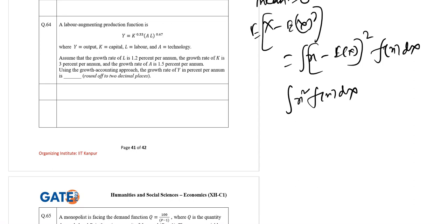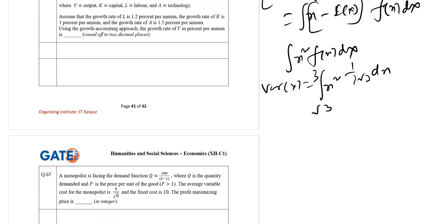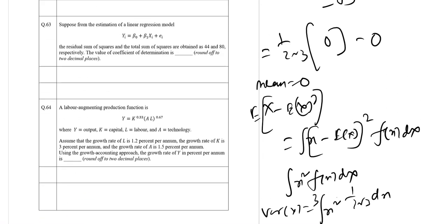So considering f(x) over the non-zero range minus root 3 to root 3, Var(X) equals integration of x² times 1 by 2 root 3 dx from minus root 3 to root 3. If you calculate, we will get 1 after the full calculation.